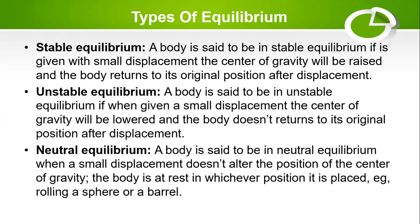When we talk about unstable equilibrium, a body is said to be in unstable equilibrium if, when given a small displacement, the center of gravity is lowered and the body does not return to its original position after displacement. Unstable equilibrium is the reverse of stable equilibrium — the body changes its original position after a simple displacement and cannot resume its original position.